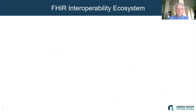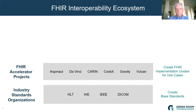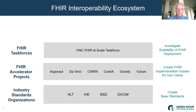So how do we get these standards? We start out with industry standard organizations. HL7 is the standards organization that created the base FHIR standards, and each of these organizations is creating base standards in a certain area of healthcare. We then have FHIR accelerator projects, which create FHIR implementation guides for specific use cases. For example, the DaVinci project started a couple of years ago to create implementation guides for exchanging data between healthcare providers and healthcare payers such as insurance companies.